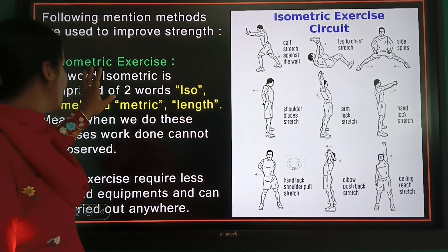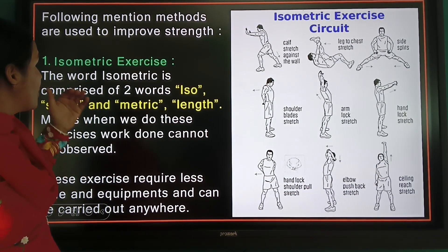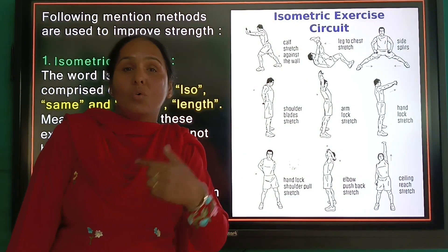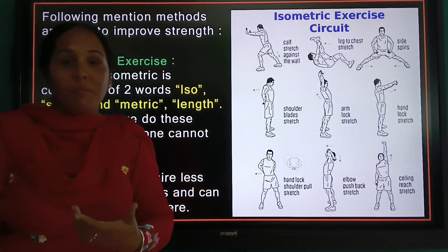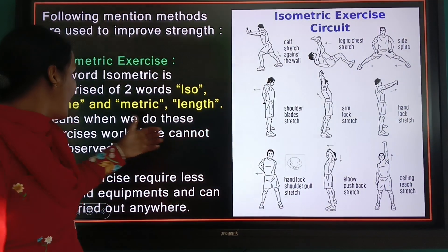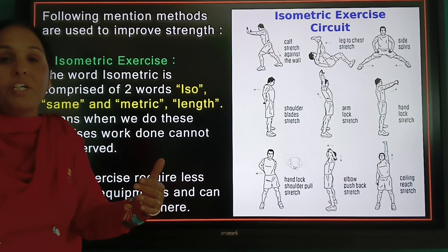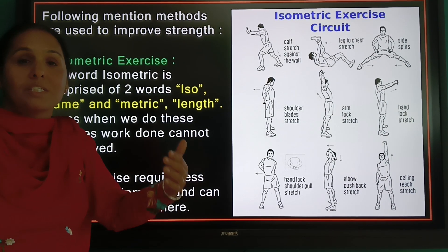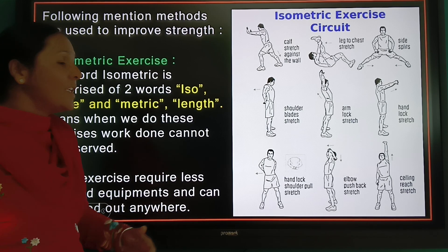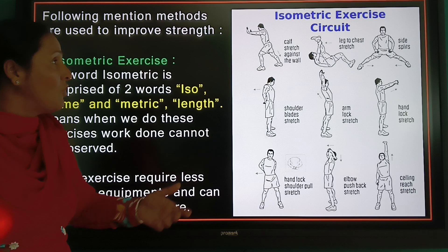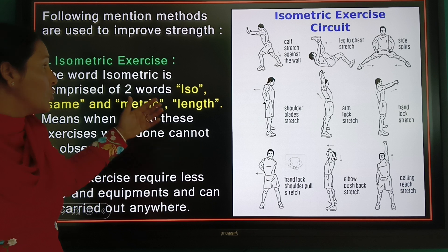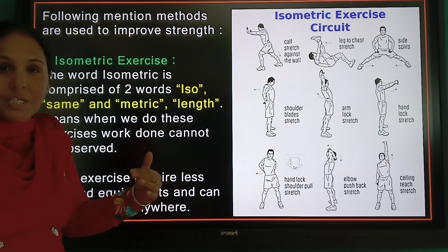The isometric method combines two words: iso and metric. Iso means same and metric means tension of muscles. The length of our muscles stays the same — there is no change. Examples include pushing the wall and leg-to-chest stress — these are isometric exercises.